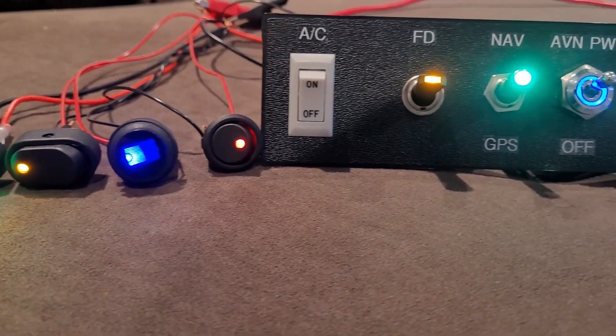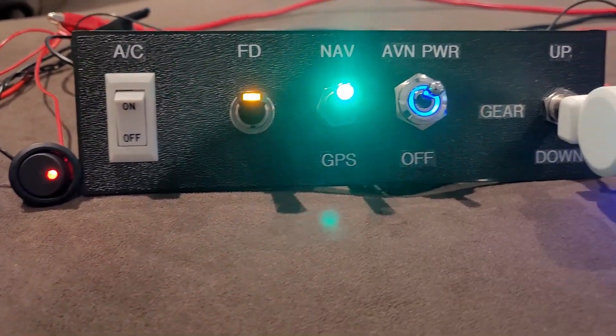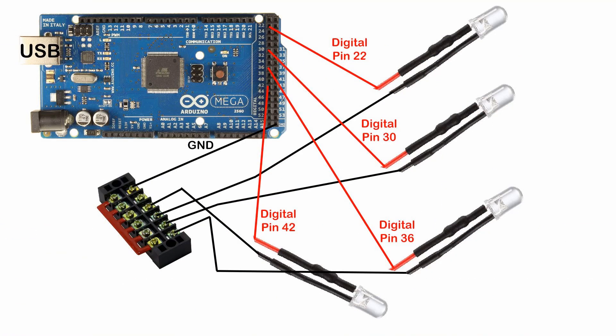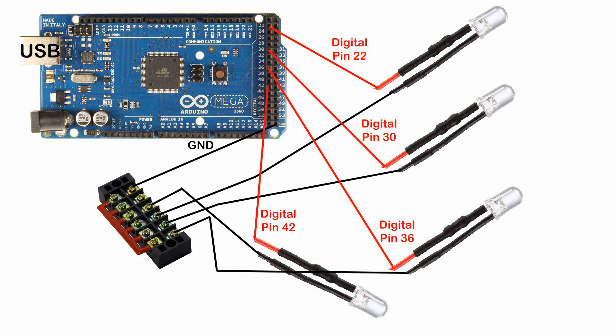Unlike push buttons and switches, LEDs require interfacing, and in this example I will be connecting these directly to an Arduino Mega 2560. Let's start with the 5V LEDs and their wiring diagram. Please note I am using LEDs with built-in resistors and my Arduino has an external power supply. The ground can go to a common ground or directly to the Arduino, and each LED can go to a digital output. In our example we are using pins 22, 30, 36, and 42.